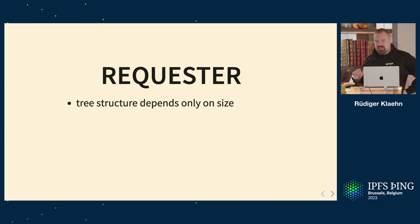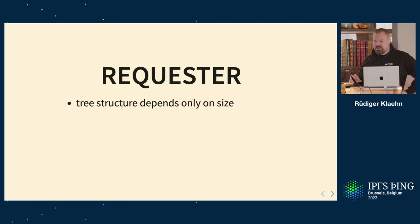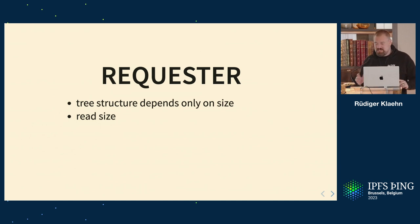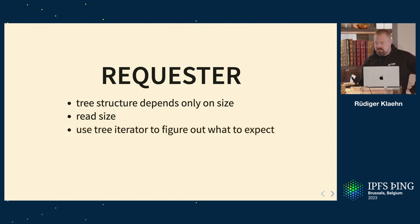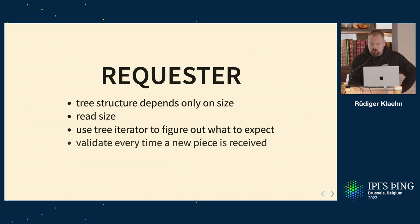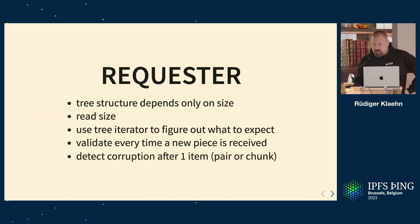On the requester side, there's no metadata, no header saying 'now comes a hash pair' or 'now comes a chunk.' But the requester knows exactly what to expect because they know the shape of the tree. The requester knows which ranges it requested and the shape of the tree, so it does the exact same traversal. First it reads the size, then knows the tree shape. The tree iterator tells it what to expect: 'now comes a pair' — read 64 bytes, validate; 'now comes a chunk' — read a chunk, validate. You will detect corruption after at most one kilobyte.